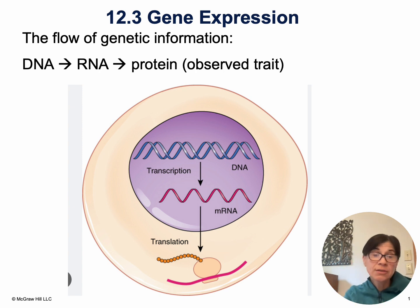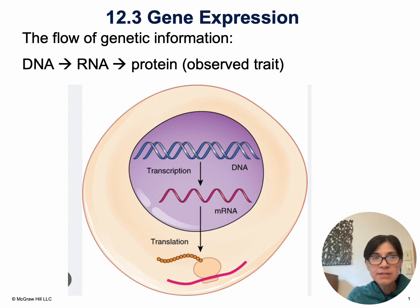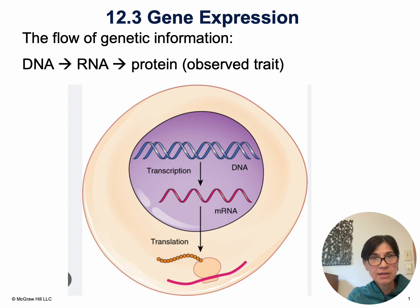Today we're covering how DNA has a code and eventually that becomes a protein. This as a whole is referred to as the central dogma of biology — the flow of genetic information. So we start with DNA, and DNA is found in the nucleus of the cell. DNA cannot leave the nucleus, and as you know from this week's work, DNA is a double helix — it's double-stranded.